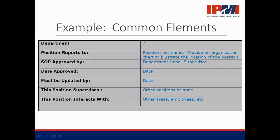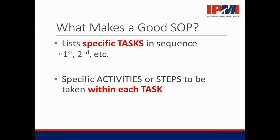Here is an enlarged example listing the elements that all SOPs should include. Now let's discuss what makes for a good SOP. First, it will list each of the individual tasks in their natural sequence — the order in which they are performed. And secondly, it will list individual activities within each task. These are the things that most of you do with your eyes closed because you know your routine so well. But describing them in writing is a more detailed yet very important undertaking.